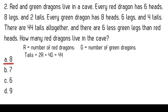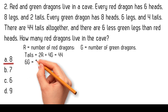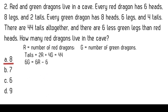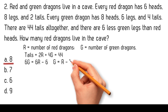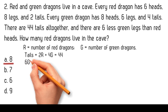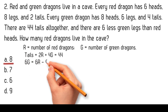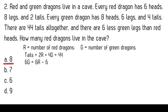There are 6 less green legs than red heads, so green legs equals red heads minus 6. Since every green dragon has 6 legs and every red dragon has 6 heads: 6g equals 6r minus 6. Dividing each term by 6, we get g equals r minus 1. Now we can substitute g equals r minus 1 into our tails formula from above.